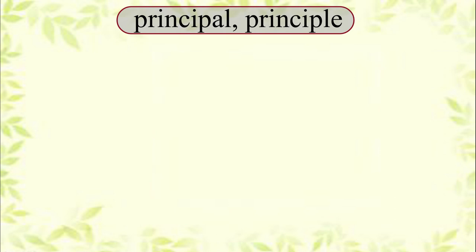The first set of words is Principal and Principle. The pronunciation of both these words is the same but the meaning is different. Principal is spelled P-R-I-N-C-I-P-A-L and Principle is spelled P-R-I-N-C-I-P-L-E.